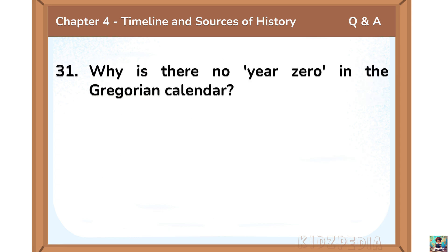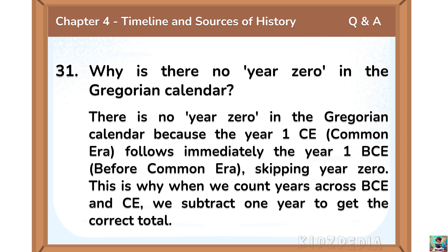Why is there no year 0 in the Gregorian calendar? There is no year 0 because the year 1 CE follows immediately after the year 1 BCE, skipping year 0. This is why when we count years across BCE and CE, we subtract 1 year to get the correct total.